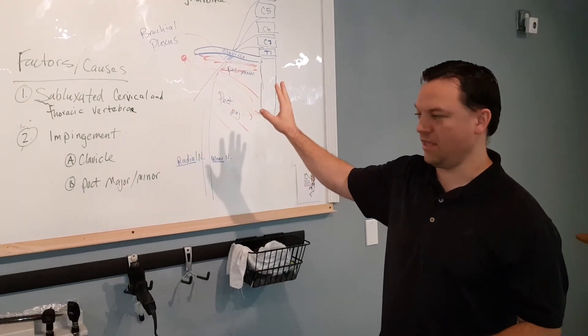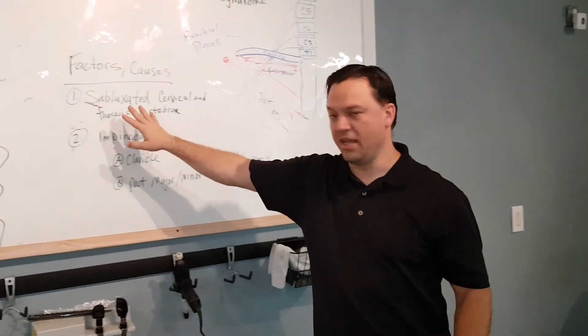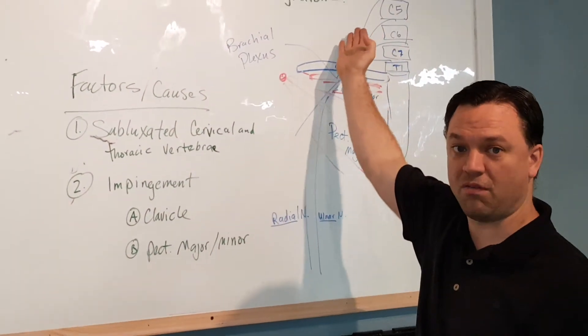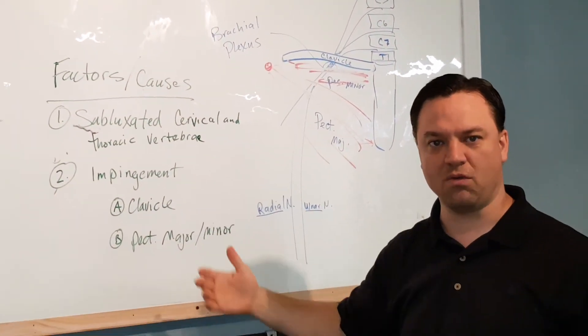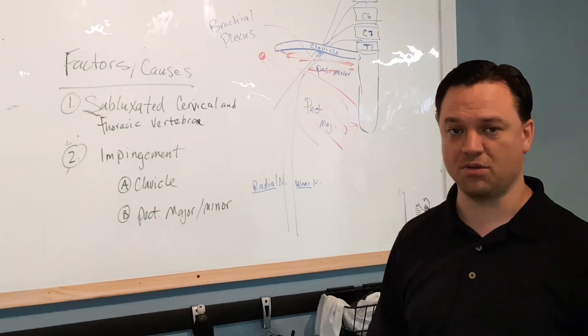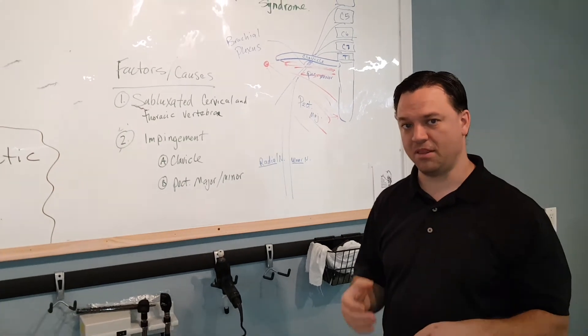Now just saying that these are the only two things that cause it—subluxated vertebra, meaning stuff that's coming from the spine itself, or the clavicle, and or the other impingement which would be the muscles—all three of those can cause thoracic outlet syndrome.